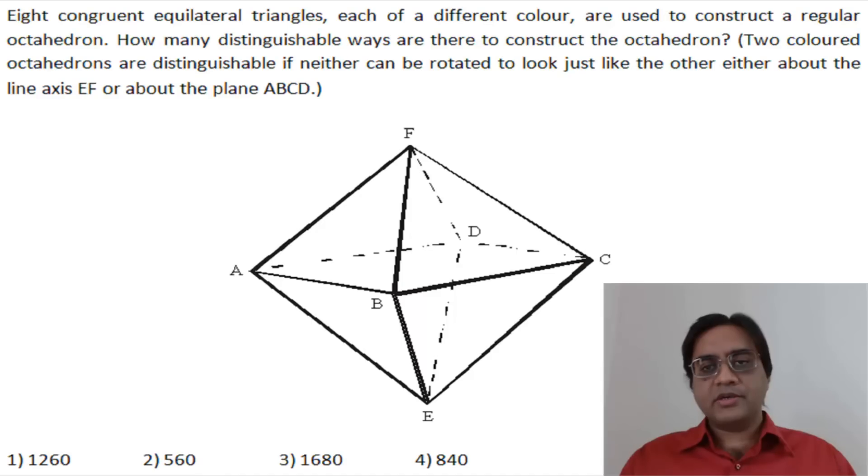Eight congruent equilateral triangles, each of a different color, are used to construct a regular octahedron. How many distinguishable ways are there to construct the octahedron? Two colored octahedrons are distinguishable if neither can be rotated to look just like the other, either about the line axis EF or about the plane ABCD.